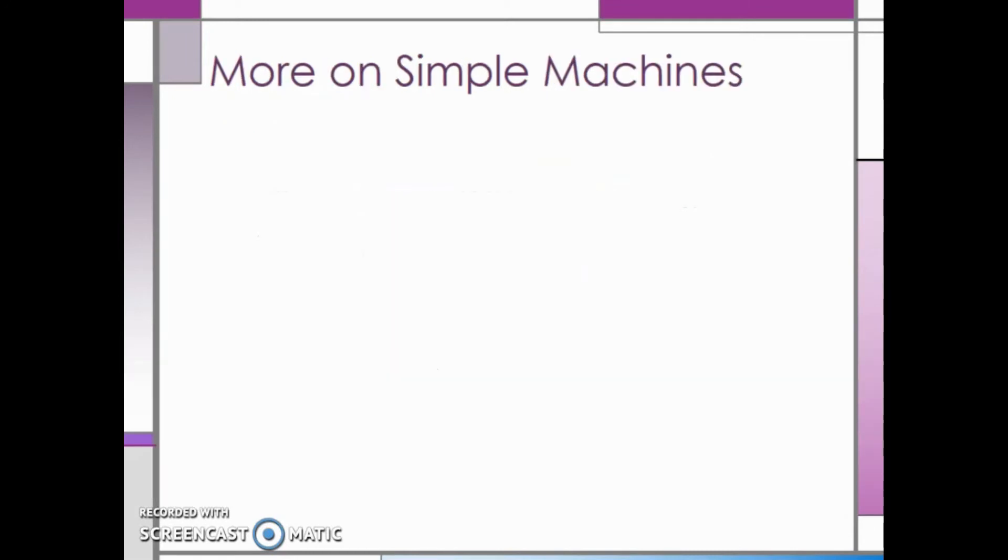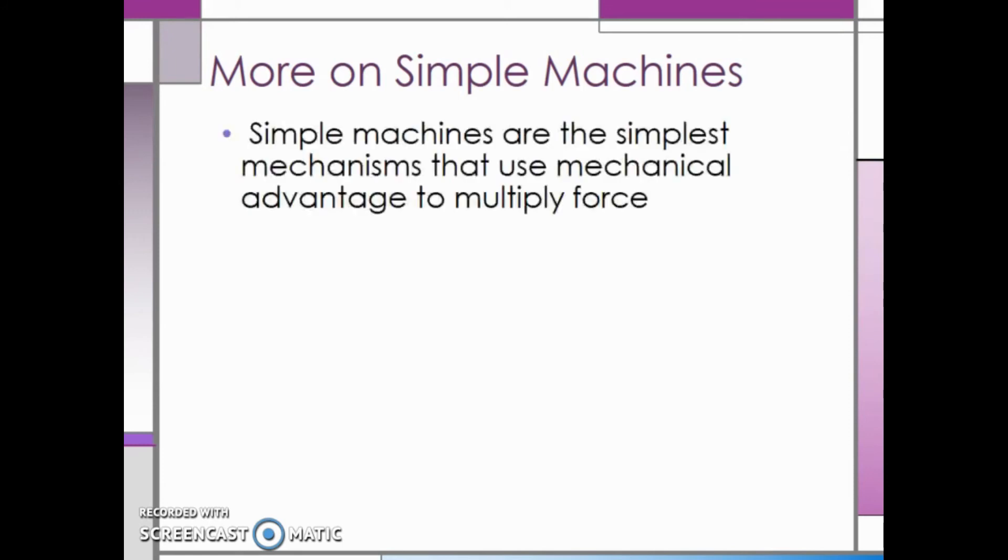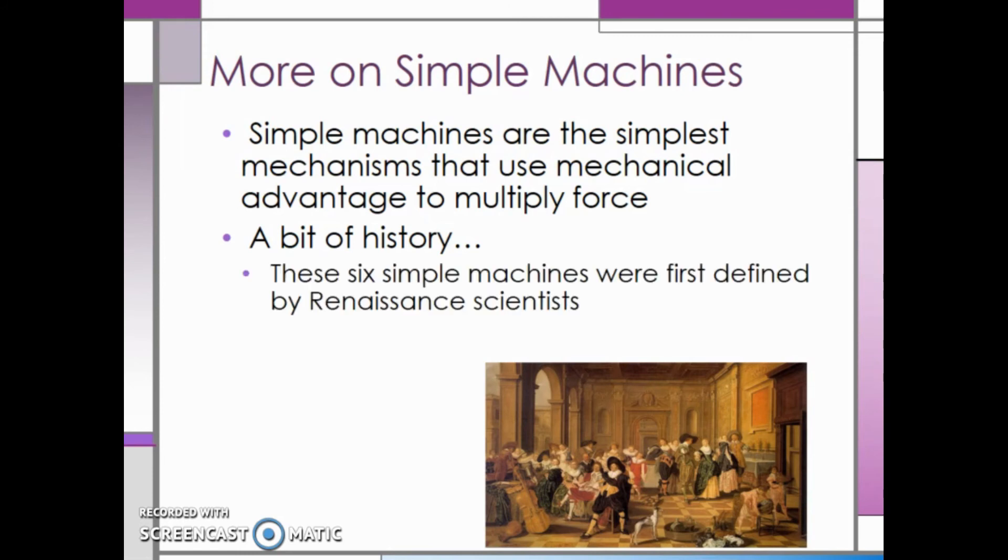Before we get into the basics of these six simple machines, let's look at a few more things that relate to all simple machines. Simple machines are the simplest mechanisms that use mechanical advantage to multiply force. These six simple machines were first defined by Renaissance scientists between 1300 and 1600 in Europe, however simple machines have been around long before they were defined.